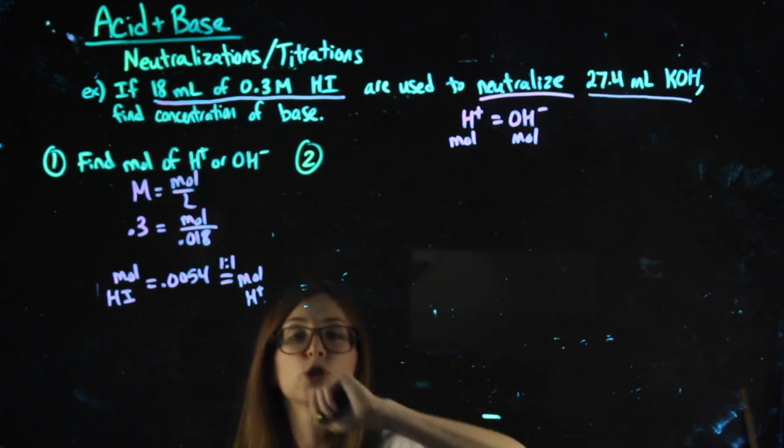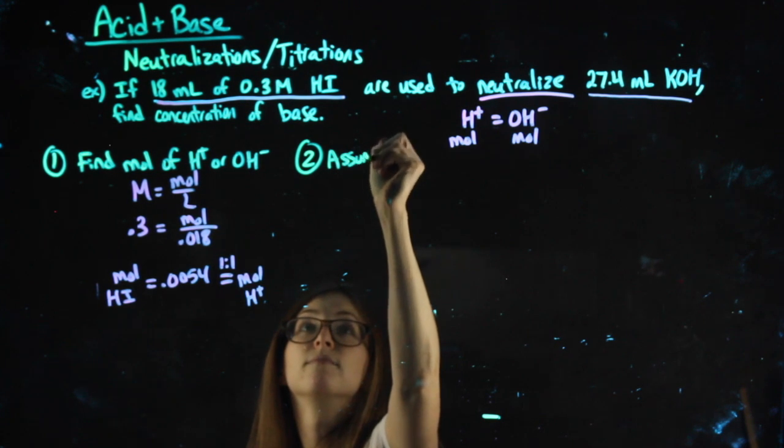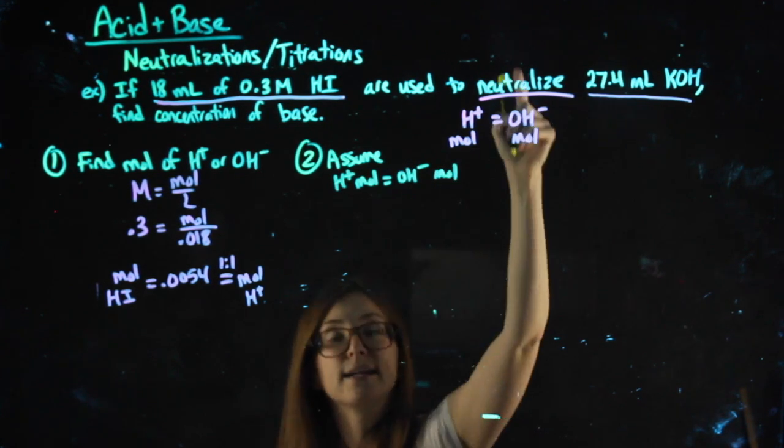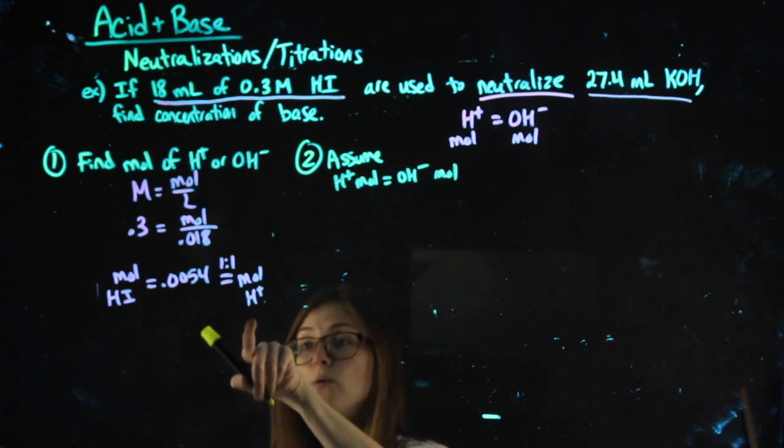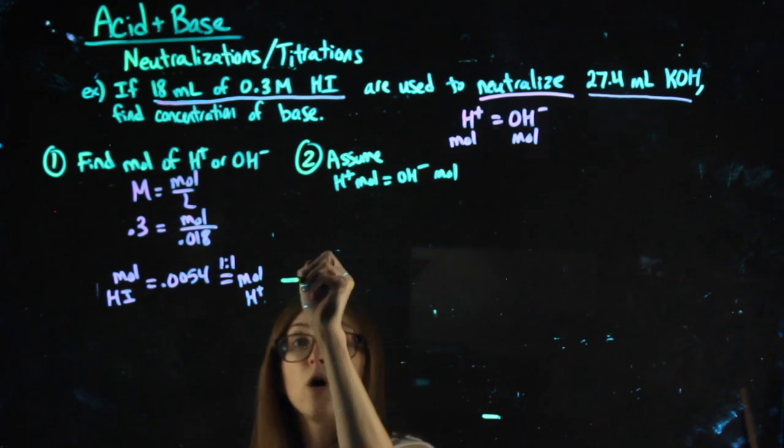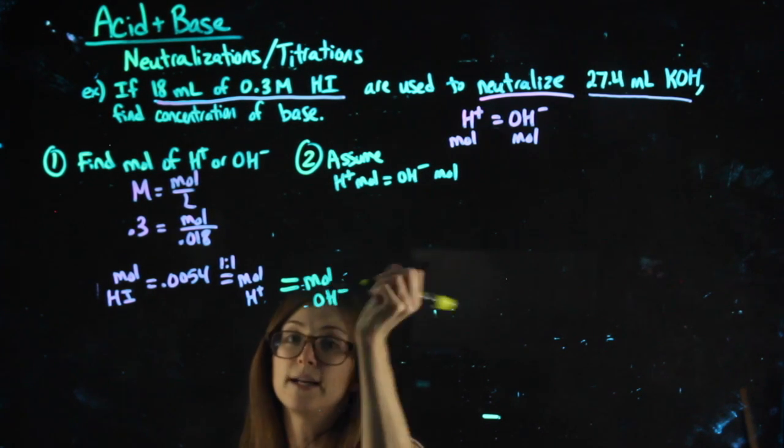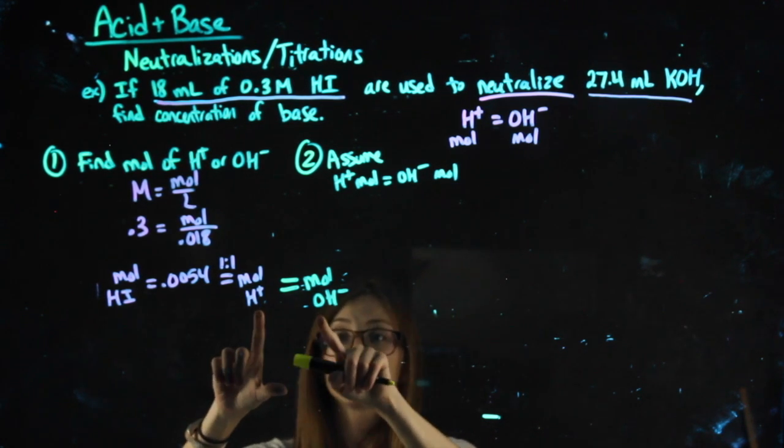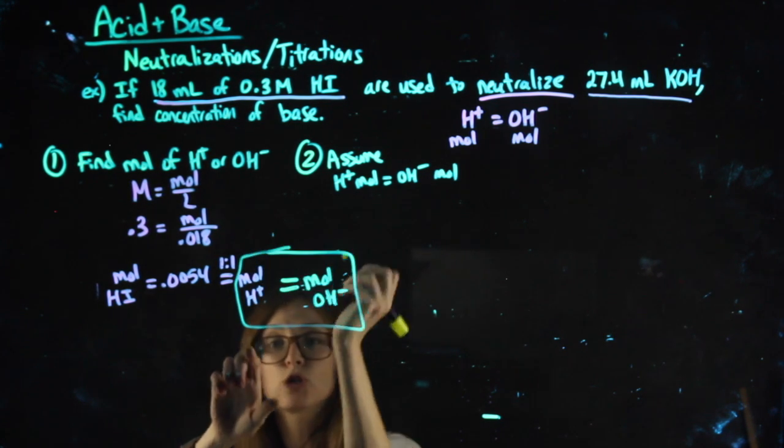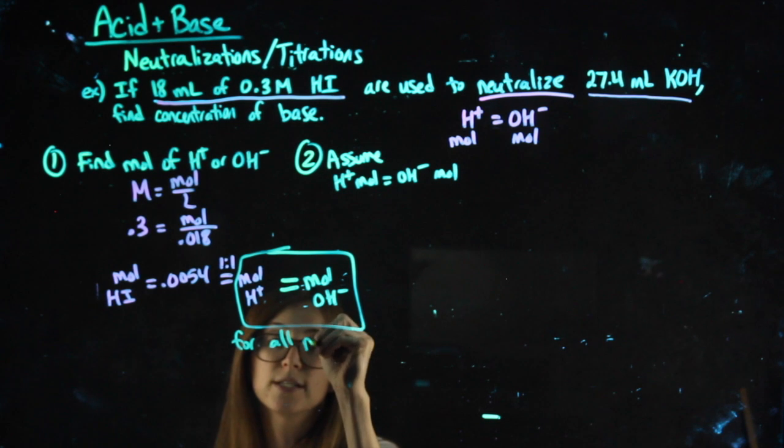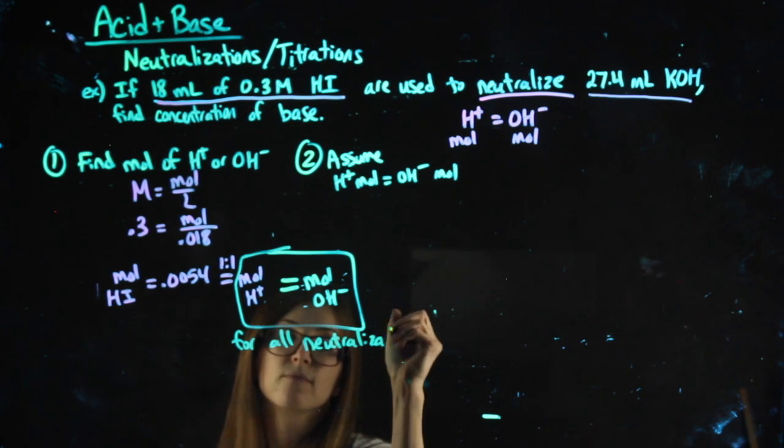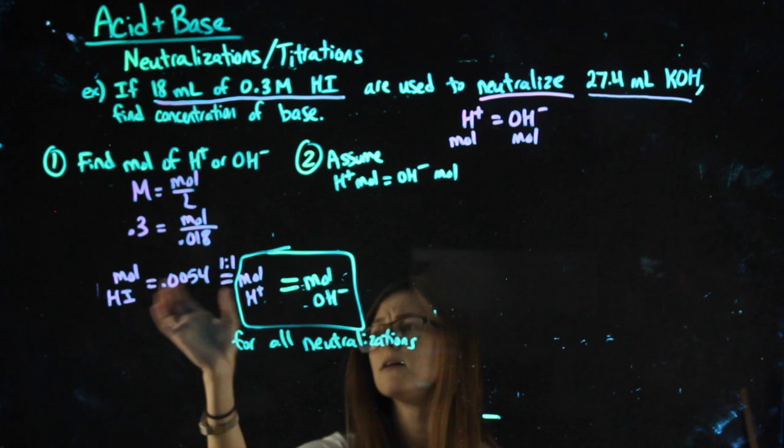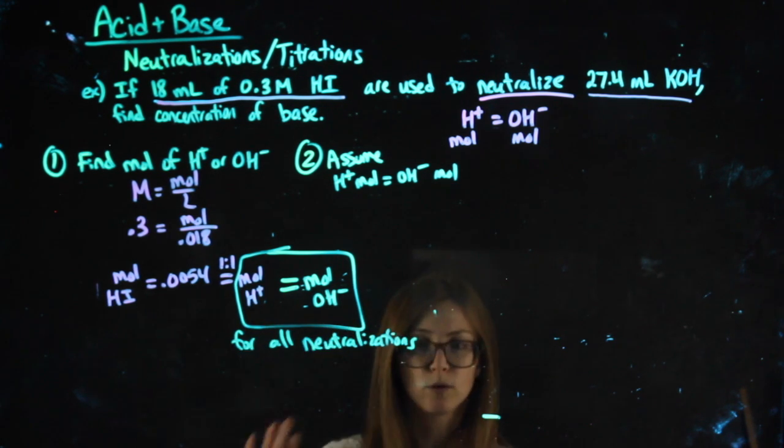Then, step two is assume H+ moles equal my OH- moles. Again, it's a neutralization. This fact must be true. So, these moles of H+ that I just found are also equal to my moles of OH-. Not because of a one-to-one ratio. That's why these were equivalent. But, moles of H+ equal moles of OH-. Unless that statement is true for all neutralizations. So we've done step two. And this is how I would ask you to show your work. You don't have to draw the box or anything, but saying, okay, my moles of H+ equal my moles of OH-.